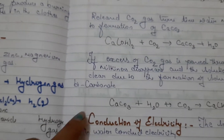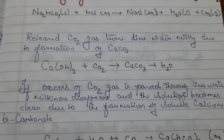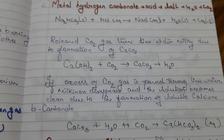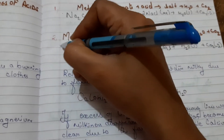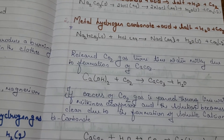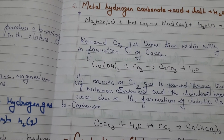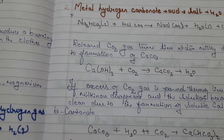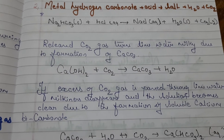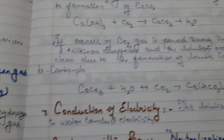If we pass excess carbon dioxide into lime water, the milkiness disappears and the solution becomes clear due to the formation of soluble calcium bicarbonate. This is an important observation.